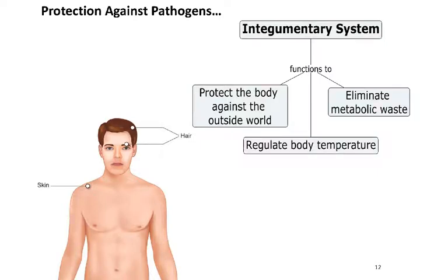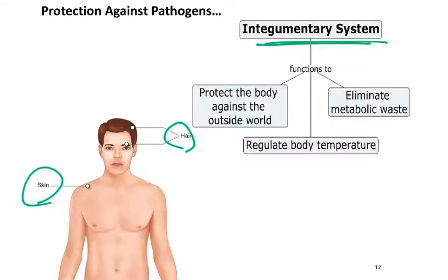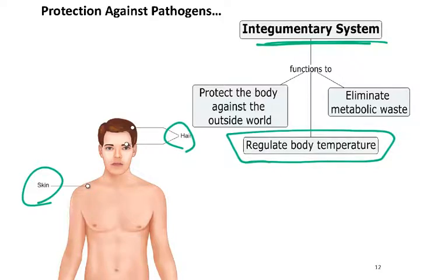Another system that helps to protect us against pathogens is the integumentary system. Like other systems, it has many functions. The integumentary system consists of the skin or cutaneous membrane, with hair and nails as accessory organs. It's considered the first line of defense in the immune system, helping to protect us from the outside world including pathogens. Our skin also helps to regulate body temperature and to eliminate a small amount of metabolic waste.